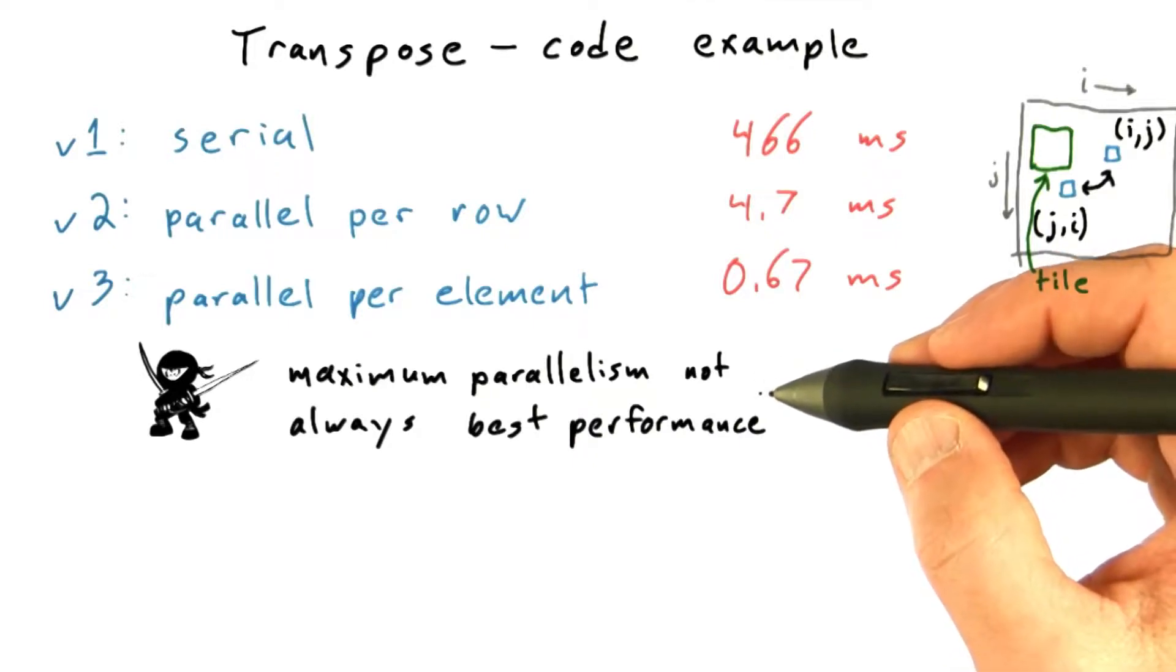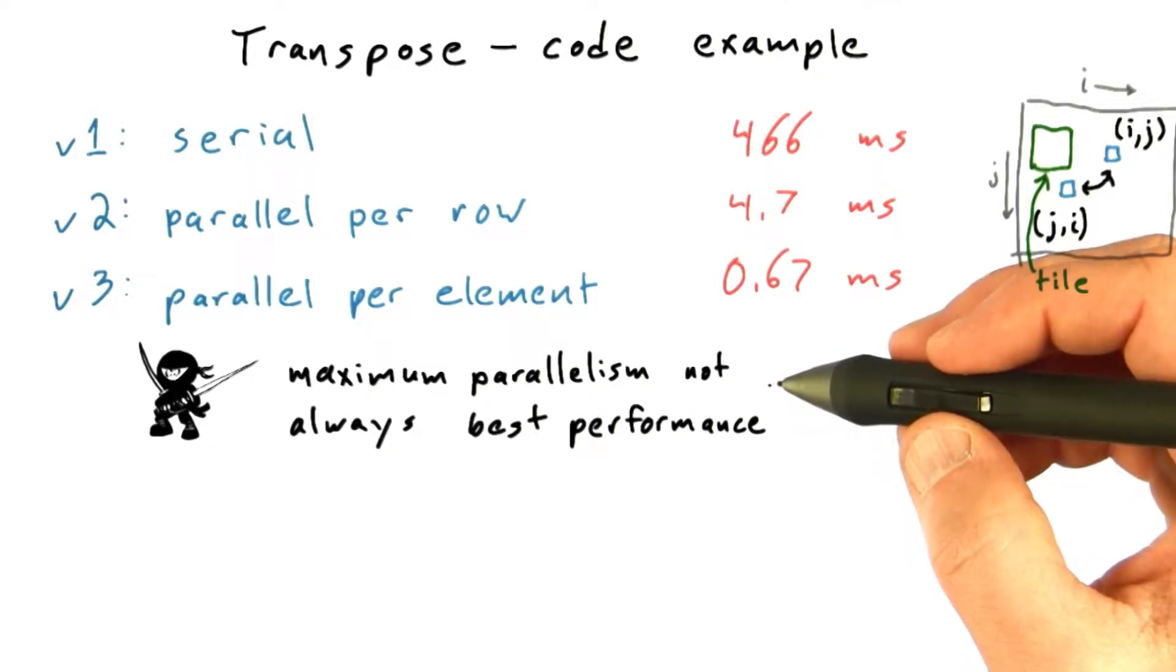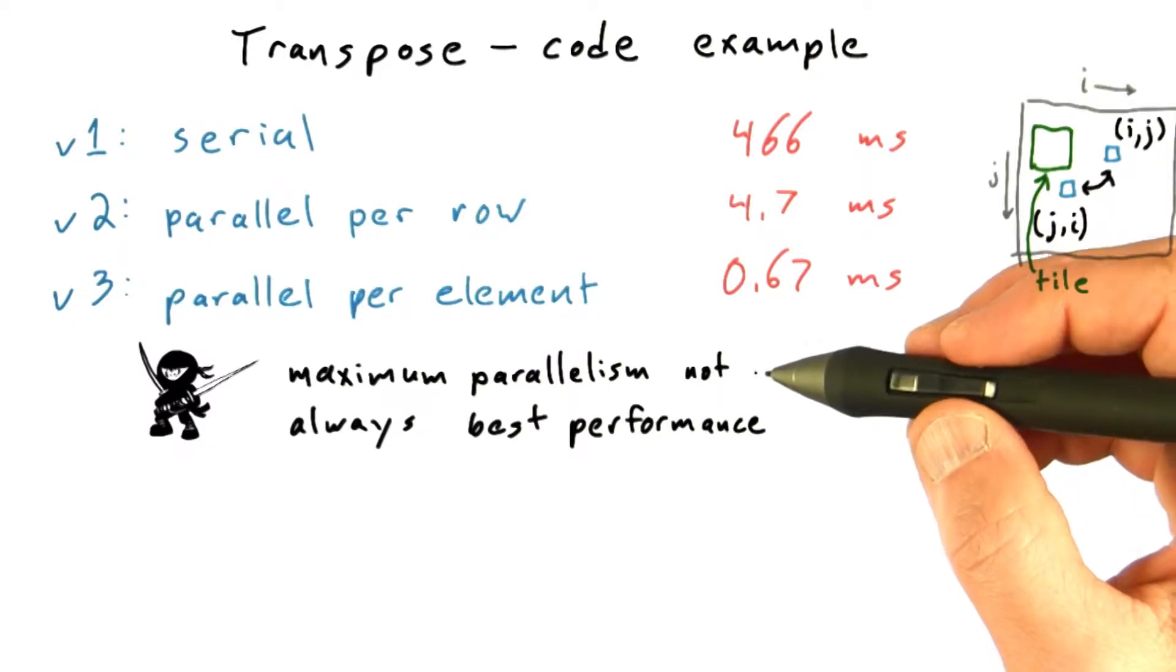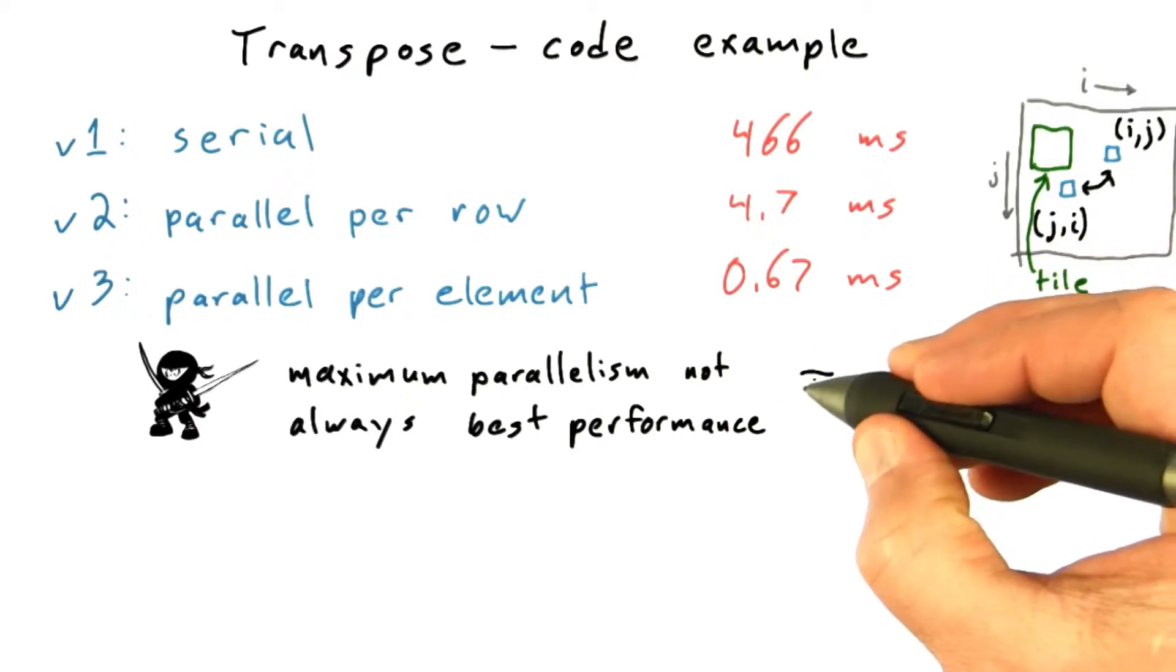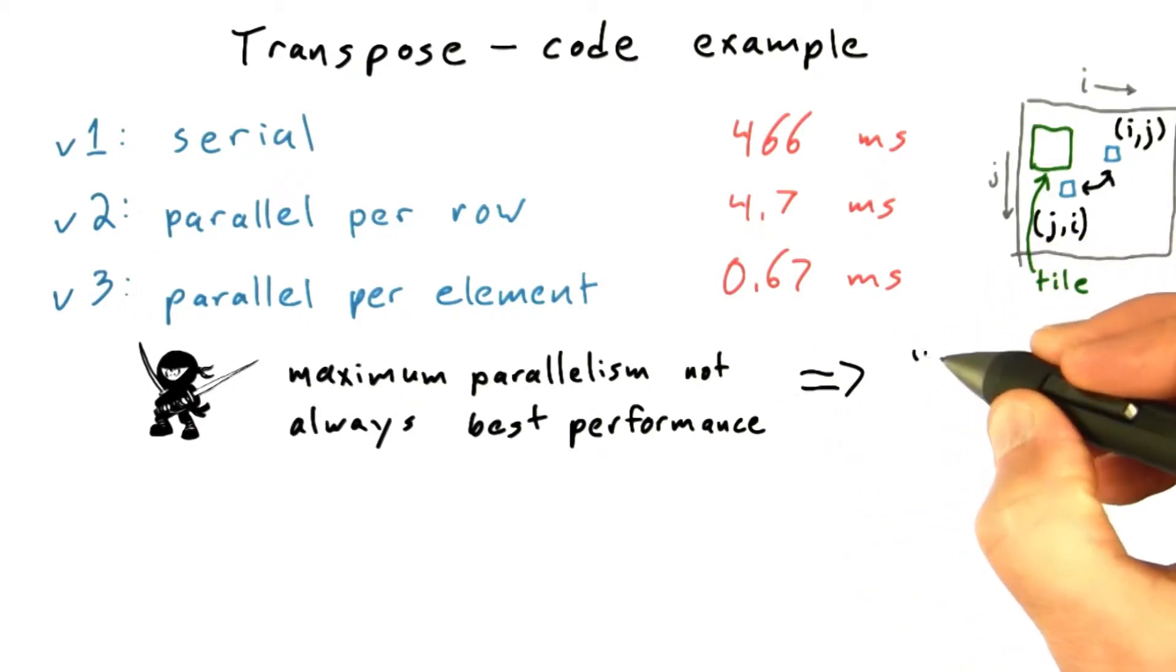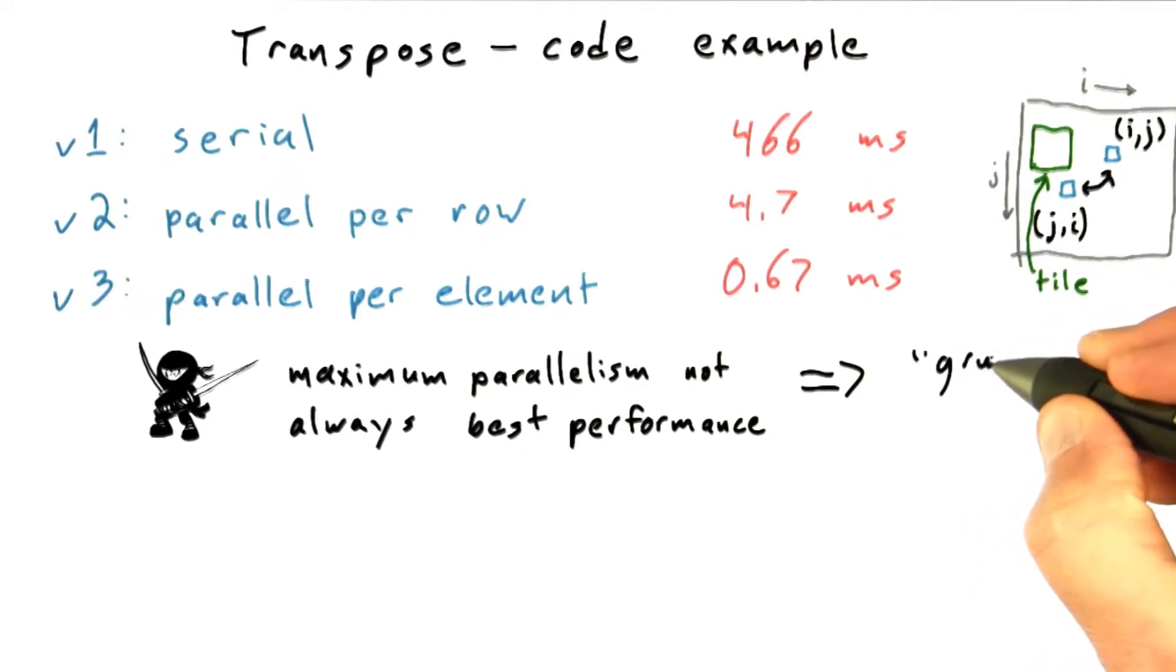I want to make a point here that it's a bit of a ninja topic, but it turns out that exploiting every last bit of parallelism isn't always the very best performing code. Sometimes it helps to do more work per thread, and this leads to an advanced optimization technique called granularity coarsening that we'll talk about later.